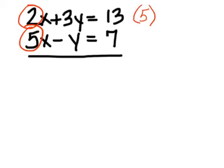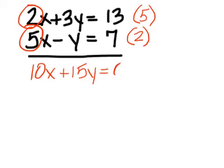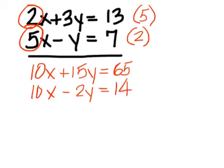On the bottom, what would I multiply 5 by to get a 10? Multiply the whole bottom equation by 2. On the top, multiply 3 by 5. So that will be 10x plus 15y equals 65. The bottom equation multiply through by 2. 10x minus 2y equals 14.